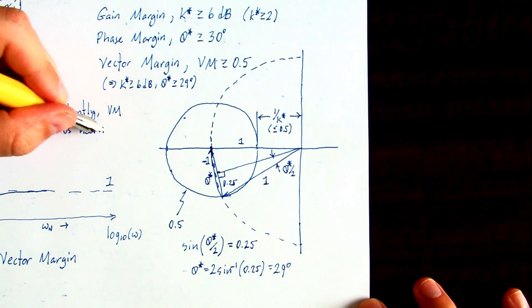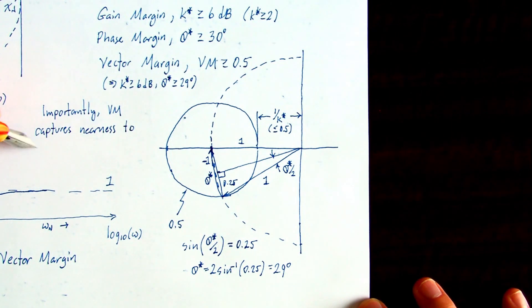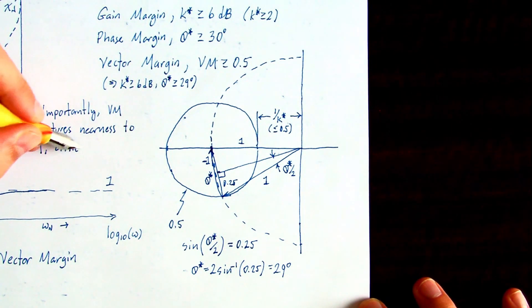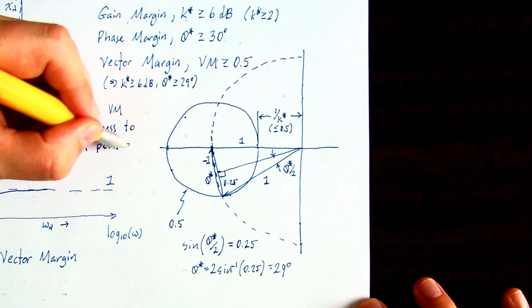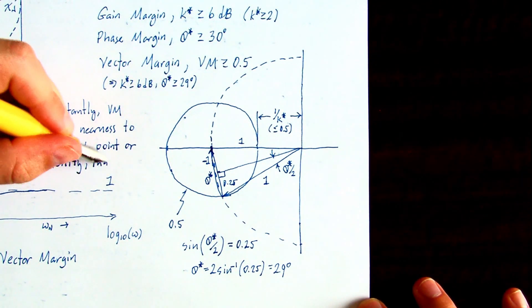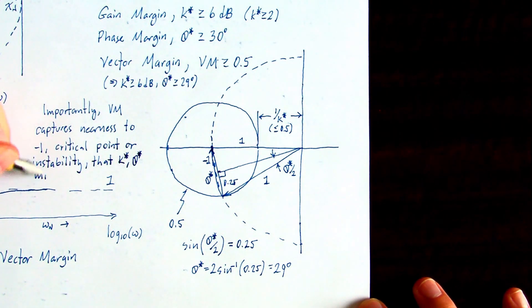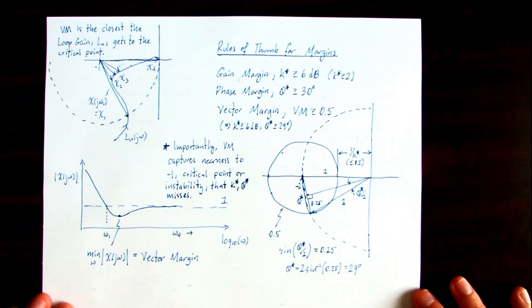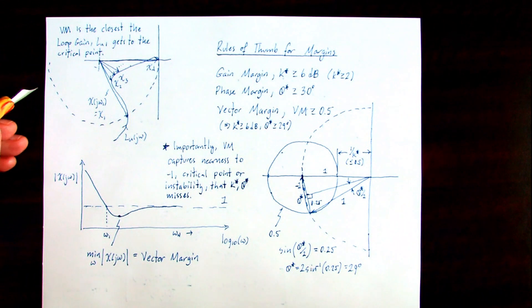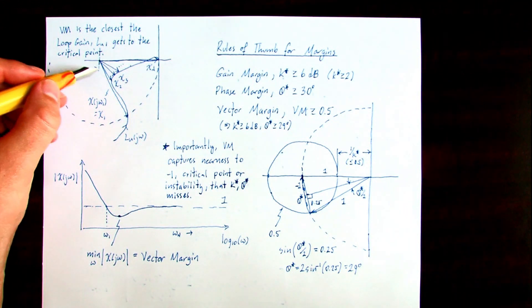But the real important point about vector margin is that it's capturing nearness to the critical point that gain margin and phase margin do not capture. So when we evaluate the robustness of systems using the loop gain, it's always good to not only compute gain and phase margin, but also vector margin.